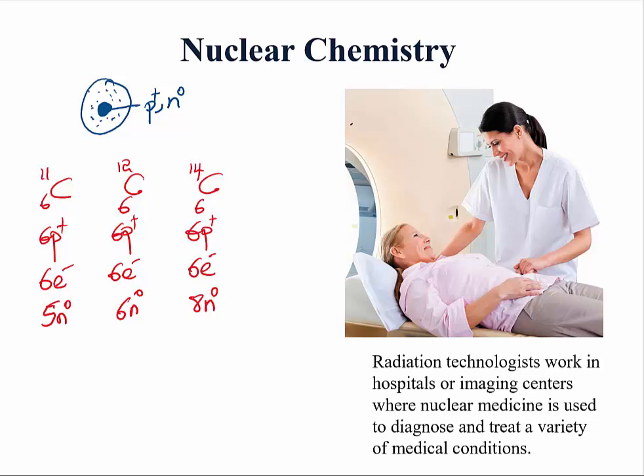The first question is: what is the role of neutrons in the nucleus of an atom? They only serve one function, and that function is to ensure that the protons are kept away from one another. In between the protons, we have the neutrons to prevent the two positively charged protons from coming into too close proximity. For the nucleus of an atom to be stable, you need to have an optimum number of neutrons, because they are the key to the stability of the nucleus.